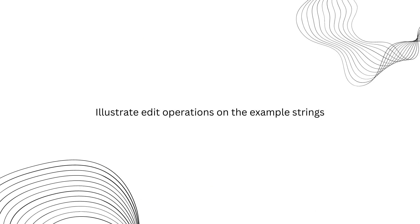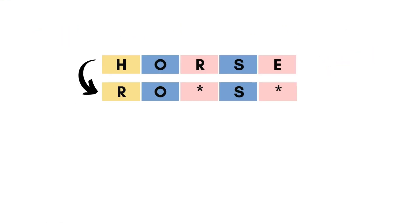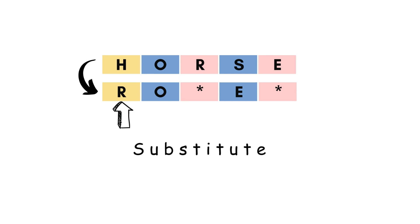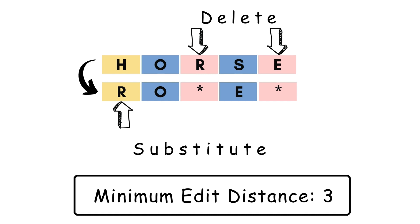Let us see some examples of how to calculate Levenshtein distance. Consider two strings: 'horse' and 'ros'. How many minimum operations does it take to transform 'horse' to 'ros'? This can be achieved by substituting 'h' with 'r', then deleting the other 'r' present in the first string, and then deleting 'e'. We are performing three operations — one substitution and two deletions — so the minimum edit distance is 3.